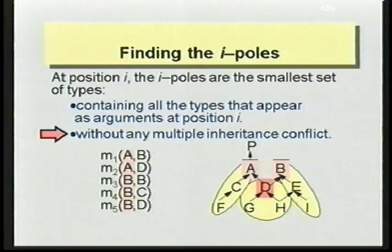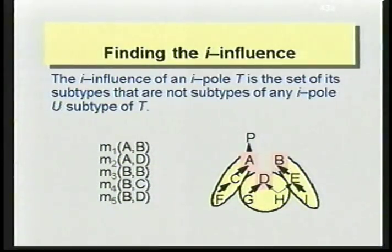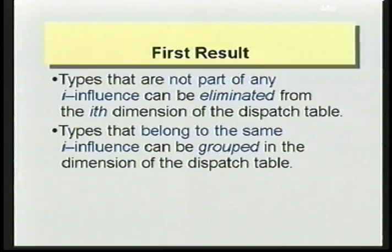How do we compute the I-influence of an I-pole T? Formally, the I-influence of I-pole T is the set of its subtypes that are not subtypes of any other pole U that is a subtype of T. Basically, you start with an I-pole, go down the type hierarchy collecting subtypes, and stop on a given path as soon as you encounter another I-pole. Types not part of any I-influence can be eliminated from the Ith dimension of the dispatch table, and types belonging to the same I-influence can be grouped in the Ith dimension.